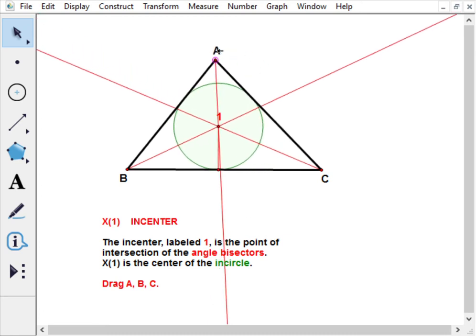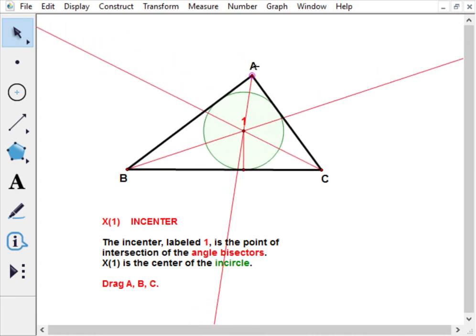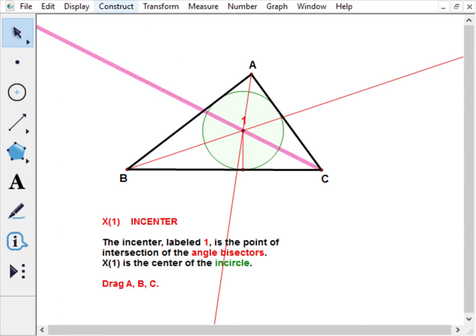It's worth pointing out that there are three other points that are important here. If we take an angle bisector and look at a line perpendicular to it, we construct that line and that point and construct a perpendicular line.